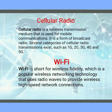Cellular radio is a wireless transmission medium that is used for mobile communications. It is a form of broadcast radio. Several categories of cellular radio transmissions exist, such as 1G, 2G, 3G, 4G, and 5G.